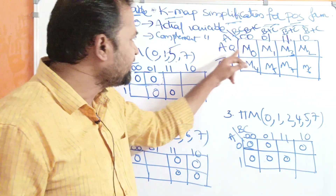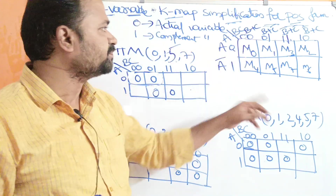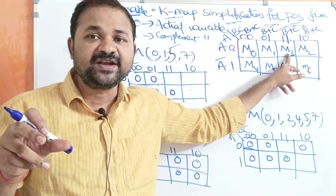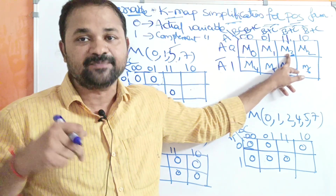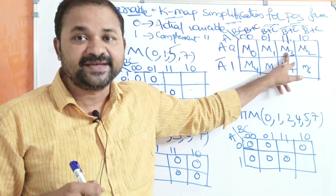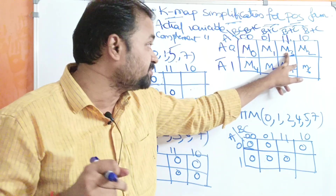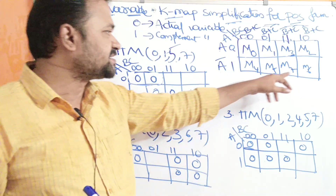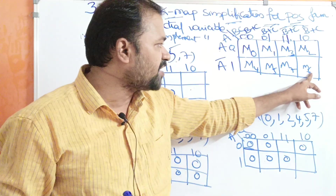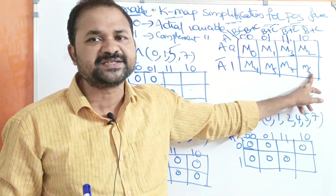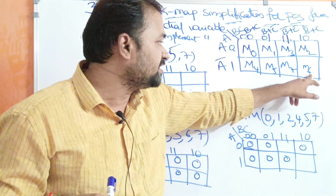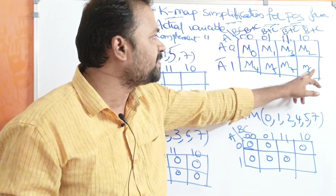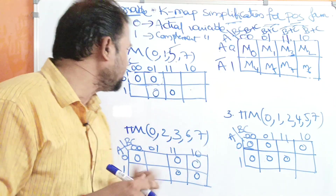The 0th max term represents A + B + C. For the third cell representing 011, in decimal notation that is 3, so this cell represents max term 3 (capital M denotes max term). M3 represents A + B bar + C bar. For the cell 110, in decimal that is 6, so this is the 6th max term M6, representing A bar + B bar + C.